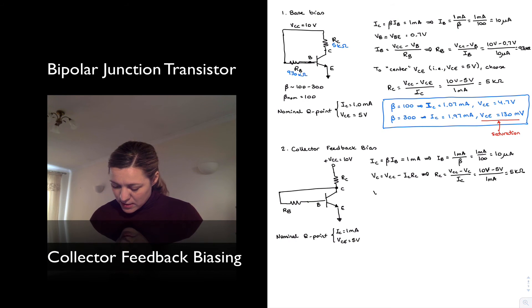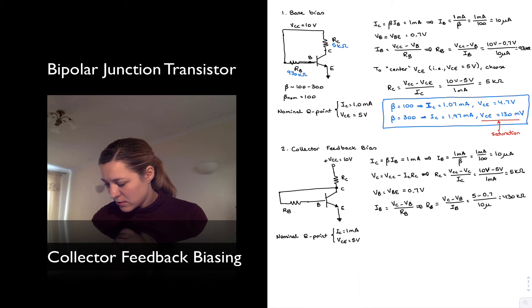And then since my VB needs to be equal to around 0.7 volts in order to turn on the transistor, I can now calculate the value of my base resistor. IB is equal to VC minus VB divided by RB. I can solve for RB, which will be equal to VC minus VB over IB. VC is 5 volts by design. VB needs to be 0.7 volts. And IB, we just calculated, needs to be 10 microamps. So this gives me a value of 430 kilo-ohms.